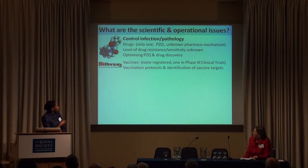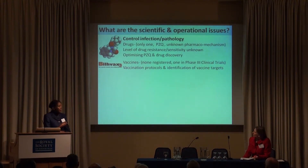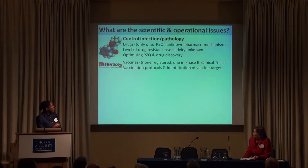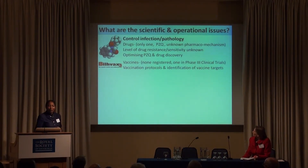In addition to drugs, we're interested in vaccines. We have no registered vaccines for the major human helminth infections. We have one vaccine called Bilhaz, now in phase three clinical trials in Senegal. My research group was involved early on in an EC-funded program to work out protocols for schistosome vaccines, and we contributed to the protocol currently being used in Senegal. We're also identifying vaccine targets — this is where the exciting immunology and molecular biology occurs.